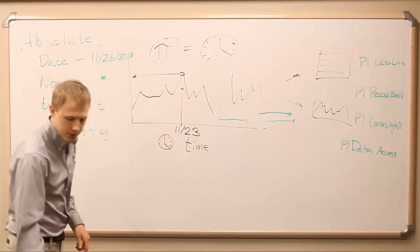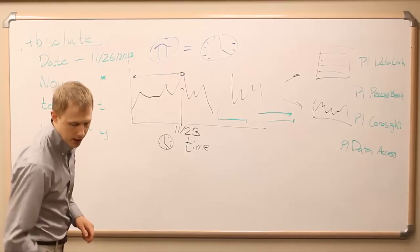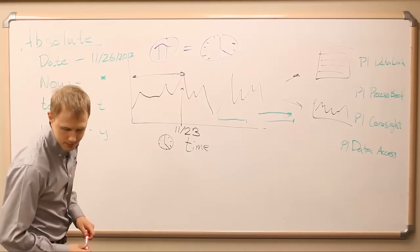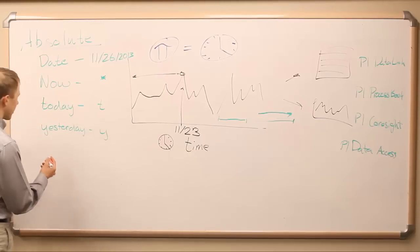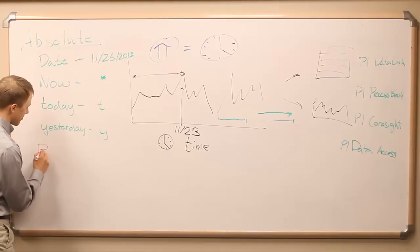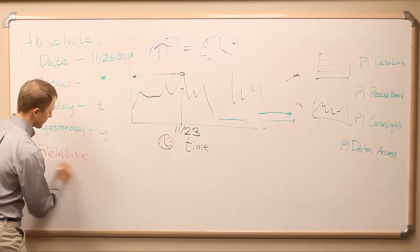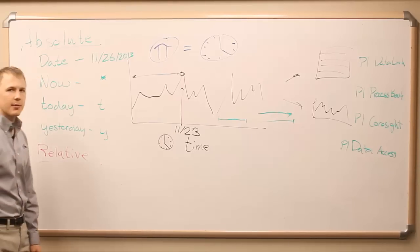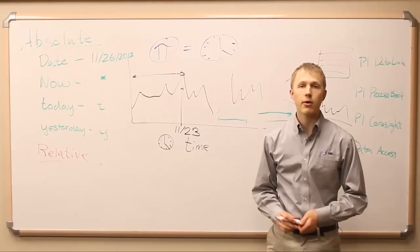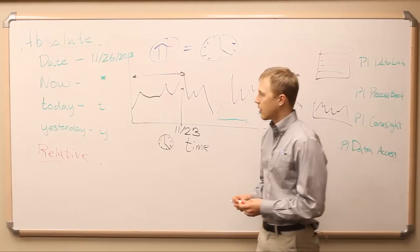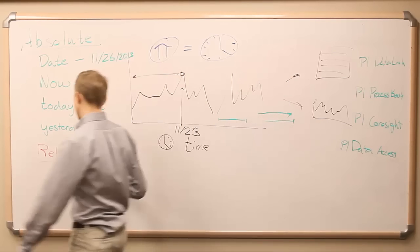Now, this is in contrast to the other type of time reference, which is something called relative. Now, a relative time reference is something that you and I are all familiar with. It's something like a minute, or an hour, or a day. A day is a length of time. So, all the relative references are lengths of time.